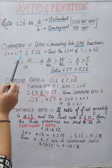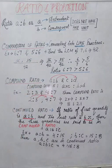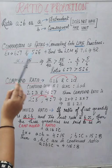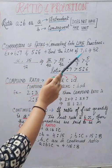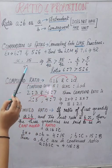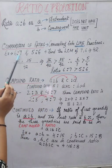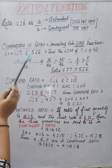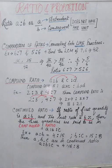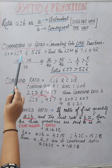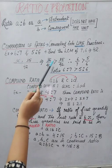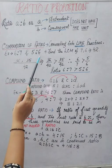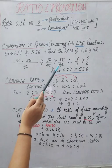For example, comparing 6:7 and 5:6 — the denominators are 7 and 6. The LCM of 7 and 6 is 42. After taking LCM and multiplying the numerators accordingly, we get 36 upon 42 for the first ratio and 35 upon 42 for the second ratio.